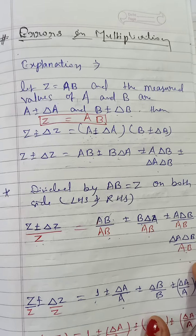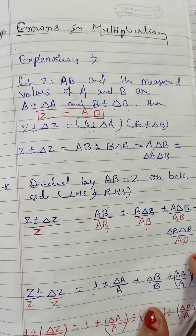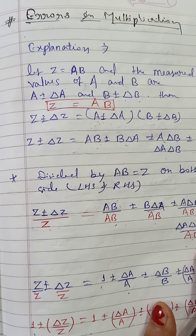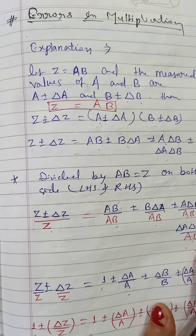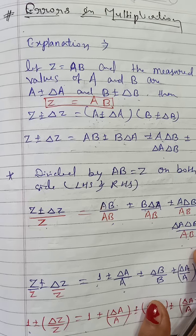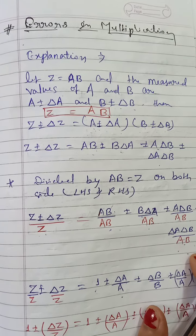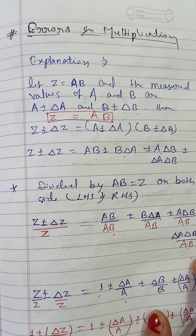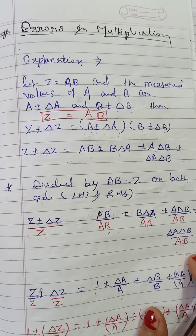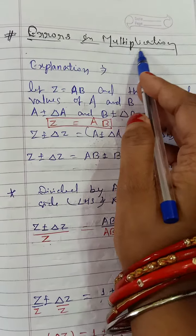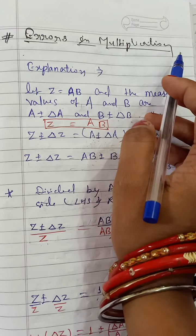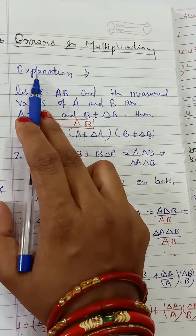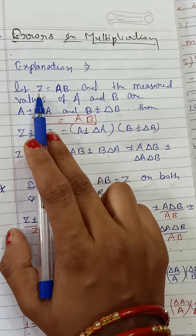Good morning children. Today I am going to explain the second part of combination of errors. In the first part we already discussed sum of error and difference of error with some examples. In this second part we will discuss errors in multiplication, errors in division, and errors in power form.